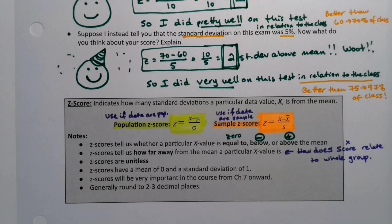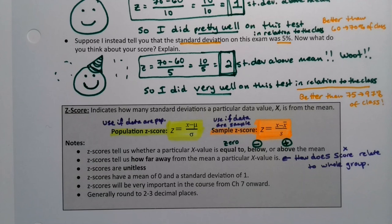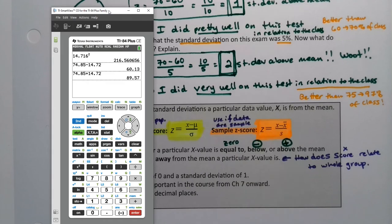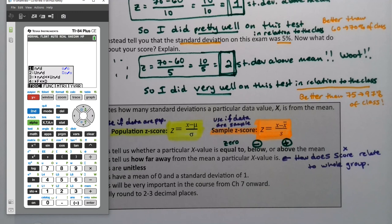One more thing before we go is that I want to show you how to find these values in the calculator, because a lot of students mess up this calculation. So when you want to find the Z-score, you want to either use alpha F1, pick number one, you want to make it look like a fraction like it does on the page, and type 70 minus 60, and then down arrow and type five and press enter, two.